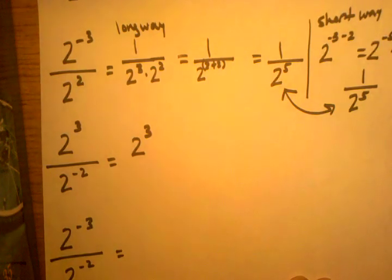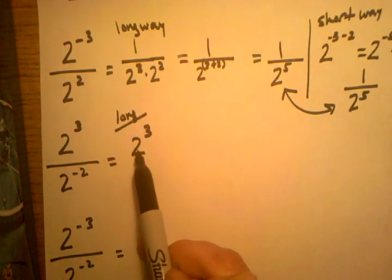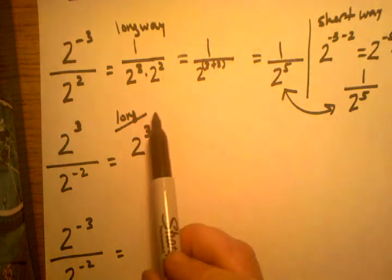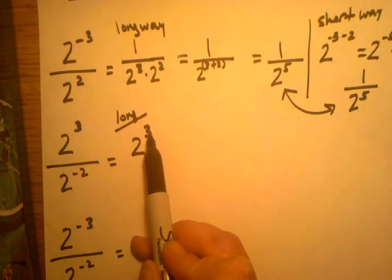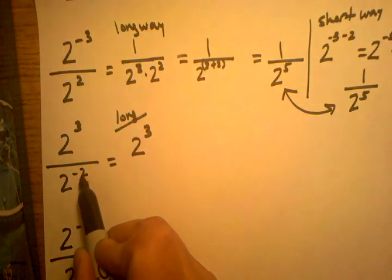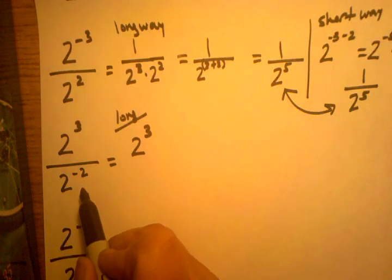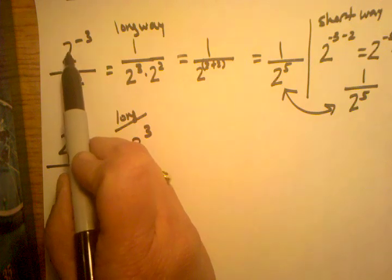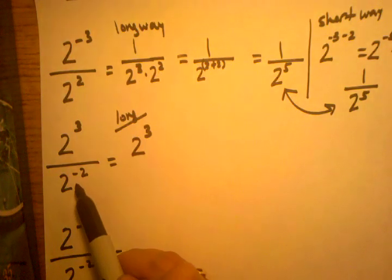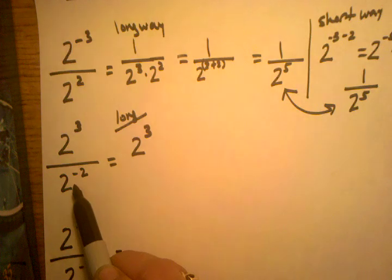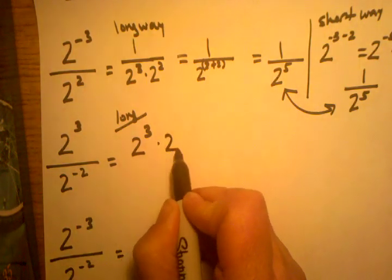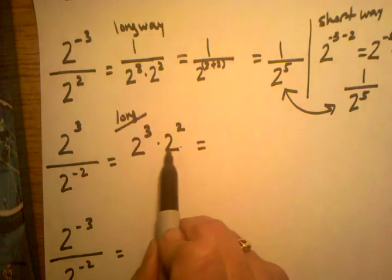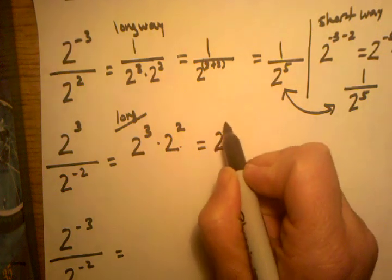Now let's go back to the third problem. We're going to solve this the long way first. We have 2 to the third power — that stays the same. My goal is to get rid of the negative exponents first. I don't really need to touch the 2 to the third power because that's a positive exponent. But in the denominator I've got a negative exponent. I want to move that up so the negative exponent goes away and becomes positive. The same thing happens in reverse: a negative exponent in the denominator, when moved up to the numerator, becomes positive. Then using the trick of adding exponents with the same base, I get 2 to the fifth power as my final answer.